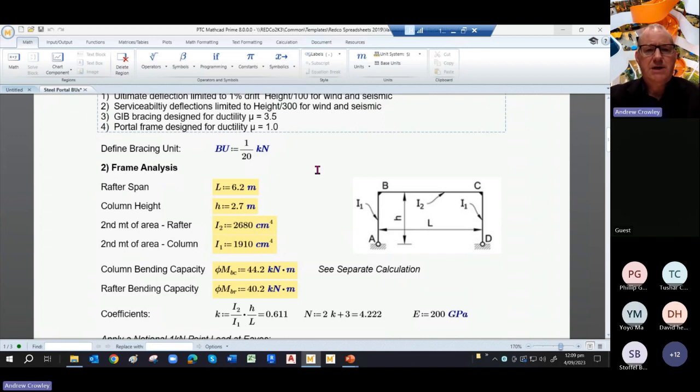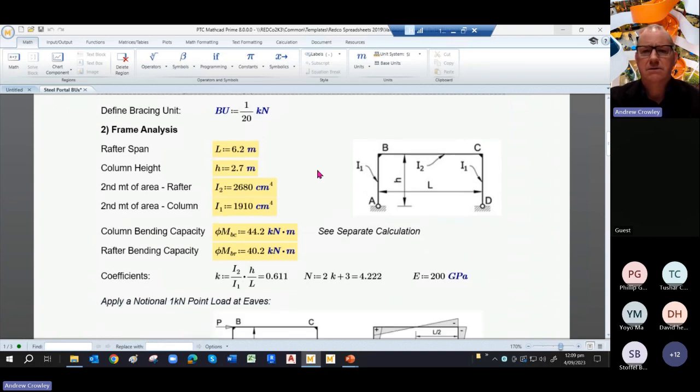So MathCAD allows you to define units, and so jib has defined the unit of a BU. What on earth is a BU? It's a bracing unit. Well, it's simply 1/20th of a kilonewton. Why didn't they just use units?